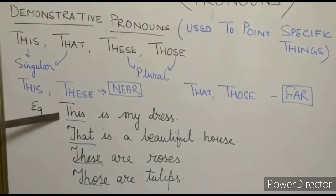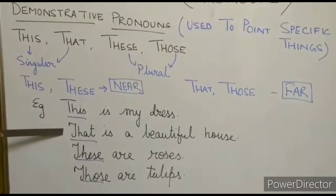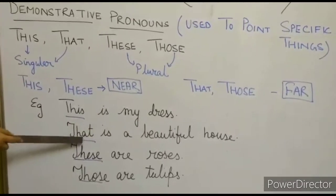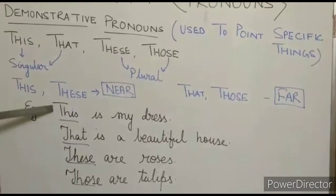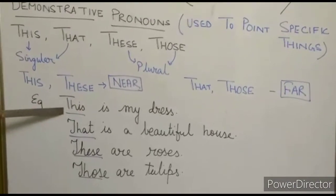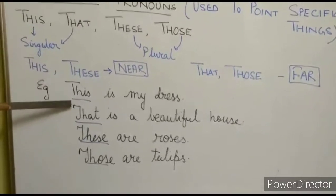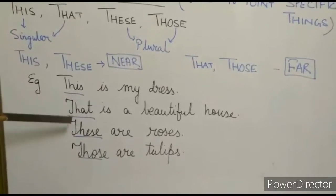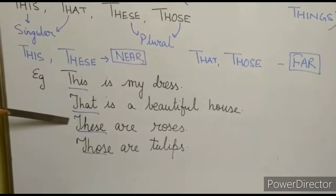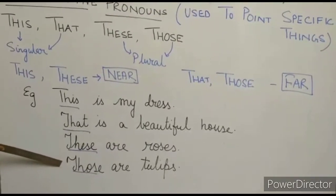Let's see some examples. 'This is my dress' — referring to one dress close to me, since 'this' is singular. 'That is a beautiful house' — referring to a house far away. For plural: 'These are roses' — roses close to me. 'Those are tulips' — tulips far away from me.